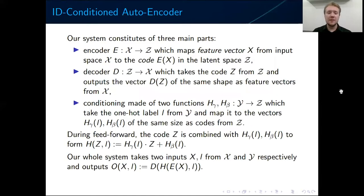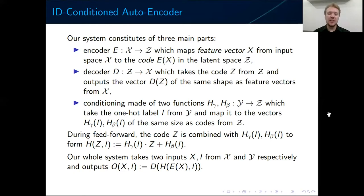In more detail, our system consists only of a conditional autoencoder made of an encoder, decoder, and conditioning. The conditioning is made of two functions: given the latent vector, we multiply it element-wise by the output of the first function and add the output of the second function. This conditioning looks like an affine transformation of the latent space, so it is quite rigid. Overall, given an input and conditioning, we feed the input to the encoder, condition it on the label L, and finally feed it to the decoder to produce the output.